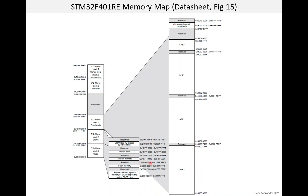At address 0x1FFF0000 we see system memory — something we won't cover in this course, but it is some built-in software that allows you to program the flash over the serial link, for example. About half of the system-on-chips I've used had some built-in software like this. The SRAM, or RAM, is located at 0x20000000. The peripheral registers, which use memory mapped I/O, are in the large white blocks in the third column.